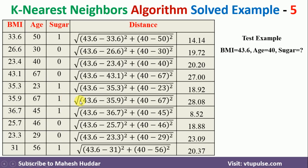I have shown the distance calculation here. In the first case, the distance is the square root of (43.6 − 33.6)² + (40 − 50)², which gives 14.14. In the second case, square root of (43.6 − 26.6)² + (40 − 30)² gives 19.72. Similarly, I have calculated the distance for all training instances, and these are the resulting distances from the test instance to each training instance.